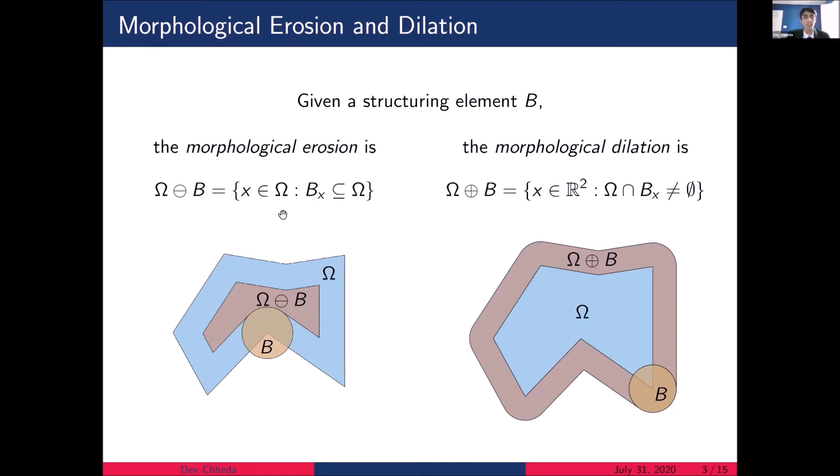So given a structuring element B, which in our case is going to be a disk of some radius, the morphological erosion can be thought of as a subtraction. So this blue shape is our original shape, omega. And you can imagine moving this disk along the boundary of our shape and subtracting that region to get the erosion. The morphological dilation is essentially the opposite process in which we move the disk along the boundary of our shape once again, but we add the surrounding region to get the dilation.